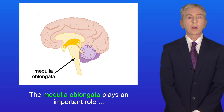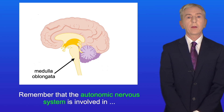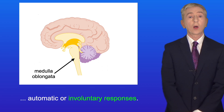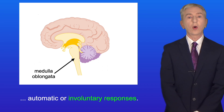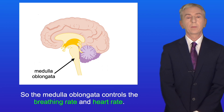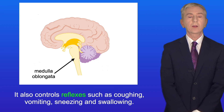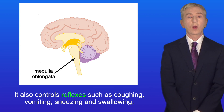The medulla oblongata plays an important role in the autonomic nervous system, which is involved in automatic or involuntary responses. The medulla oblongata controls breathing rate and heart rate. It also controls reflexes such as coughing, vomiting, sneezing, and swallowing.